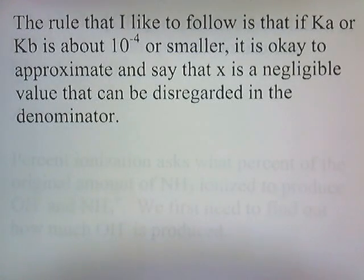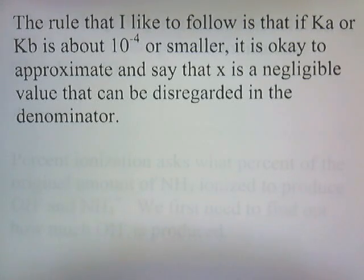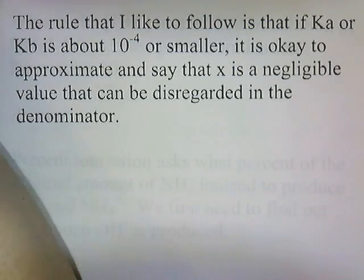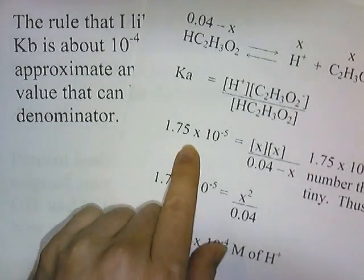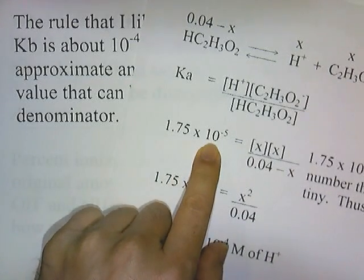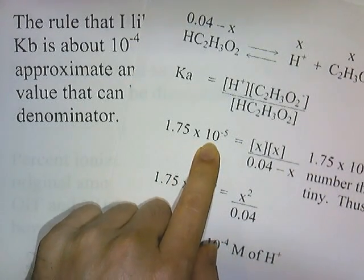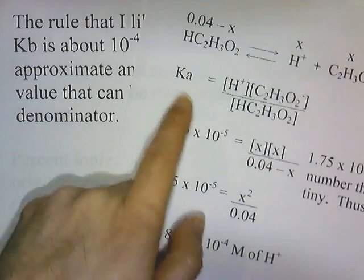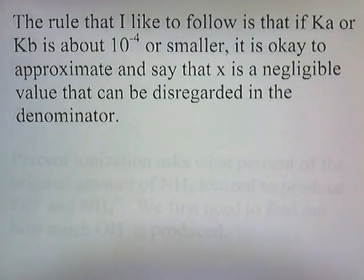The rule I like to follow is that if KA or KB is 10 to the negative fourth or smaller, it's okay to approximate and say that x is a negligible value that can be disregarded in the denominator. In this problem the KA is 10 to the negative fifth, which is even smaller, so that allows us to use the approximation.